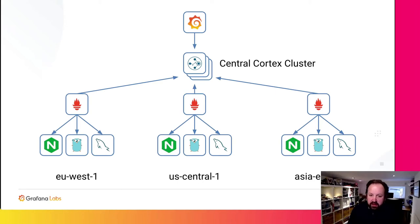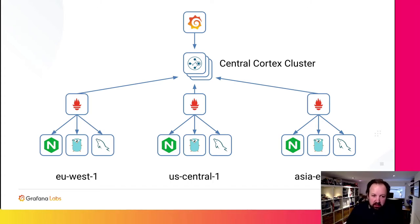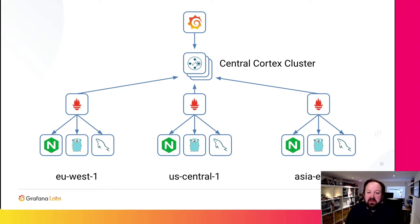Cortex replaces the need for that global federation server. You can have all the edge locations push all their raw samples directly to that Cortex cluster. This is good for two reasons: first, this is a push not a pull, which is more sympathetic towards how a lot of organizations have their networks organized. But also the Cortex cluster is scalable — as you add more clusters and more metrics in individual locations, you can scale up that Cortex cluster to take all the load, all the raw data. This makes it really easy to do ad hoc queries. Because you've centralized all of this, there's one natural place to add long-term storage, to invest in query performance, and to make sure your users know there's one place to go to get all their answers.